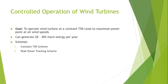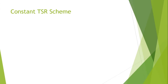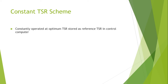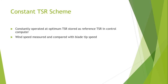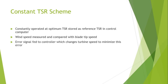I will continue with these two. In the constant tip speed ratio mechanism, the turbine is constantly operated at the optimum TSR, which is stored as a reference in the TSR controller or computer. The wind speed is measured and compared with the actual blade tip speed.